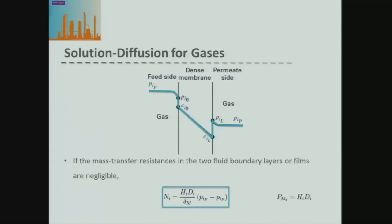We can ignore the mass transfer in the fluid boundary layer as very small in comparison to the driving force change. So we can write our flux in terms of the partial pressure of our bulk feed gas. From our definition of flux, our permeability is given by the diffusivity through the membrane times Henry's law constant for that particular gas-membrane combination.